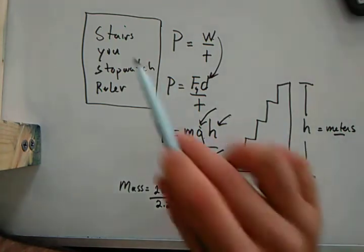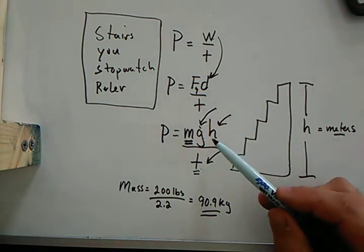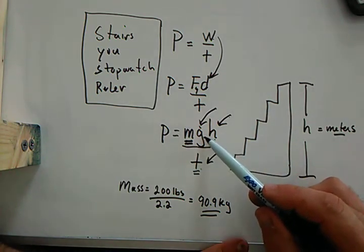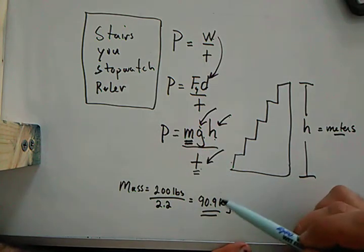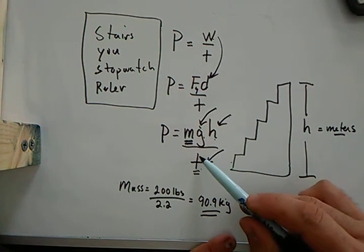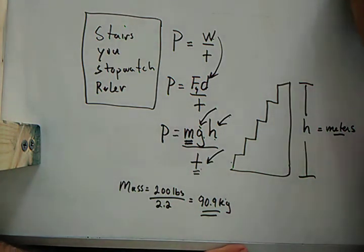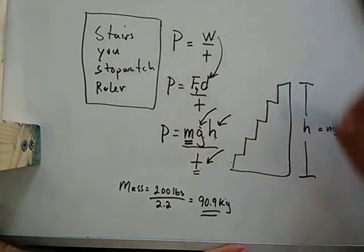So look, this is a lab activity which actually is pretty simple if you've got stairs, yourself, a stopwatch, and ruler. I got the height of the staircase, which I have as the H. I know what gravity is, it's 9.8. I know what my mass is, my mass would be 90.9 kilograms, and I know how long it takes me.